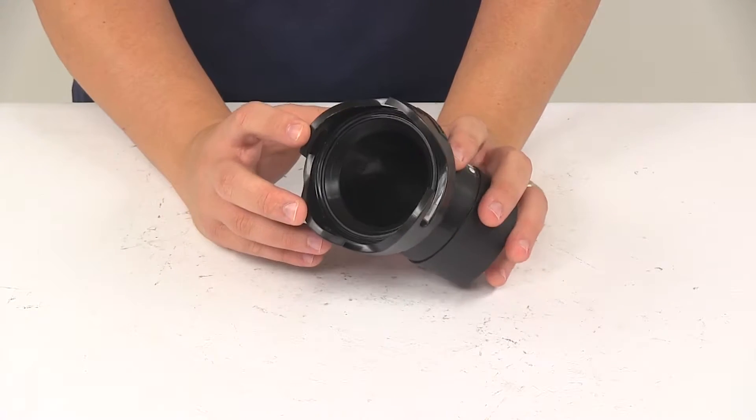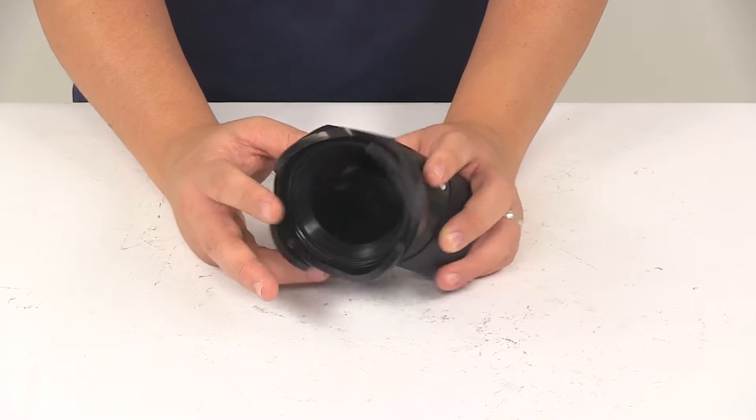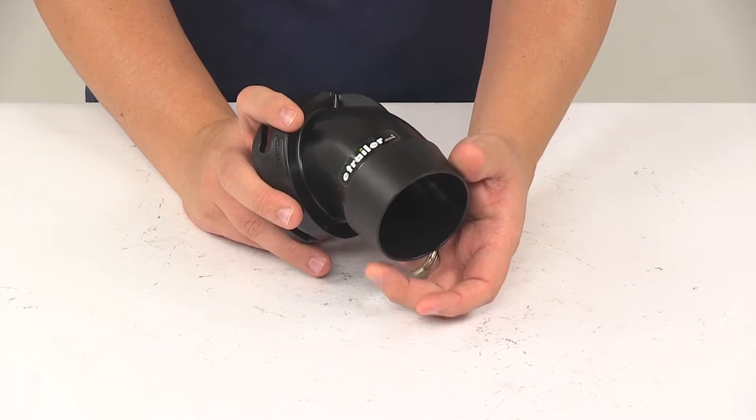The bayonet fitting is going to have a four hook design that allows you to easily connect to a lug sewer hose fitting, and then again the tapered end is going to slide easily into your sewer hose.